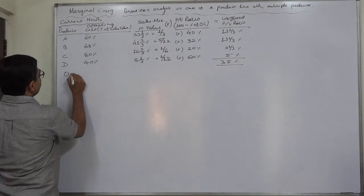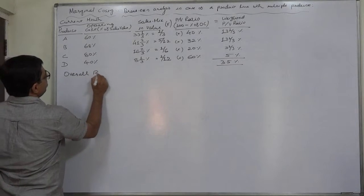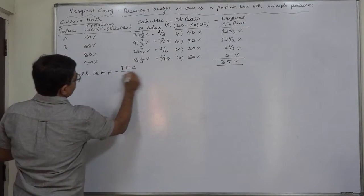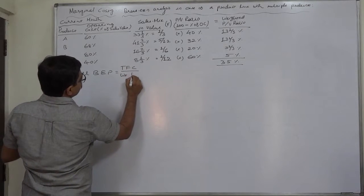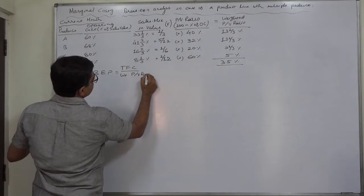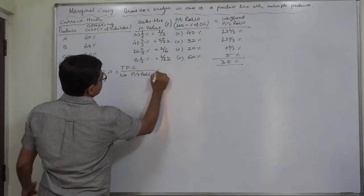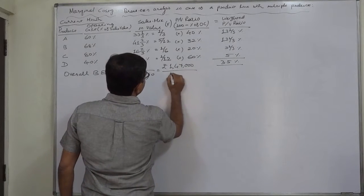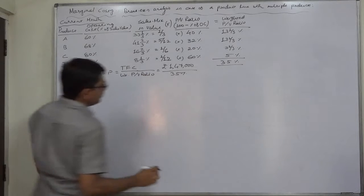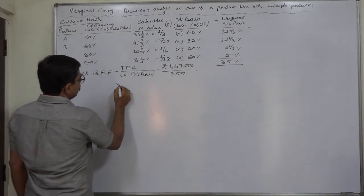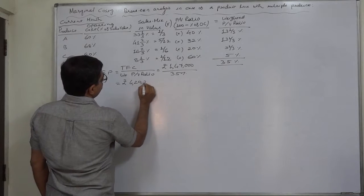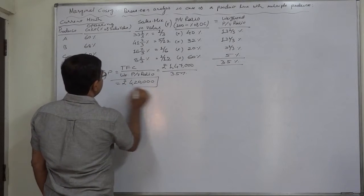Now we can calculate overall break-even point. That will be break-even sales value, total fixed cost upon weighted PV ratio. Because we have to use PV ratio, that will give us the sales value. Fixed cost is given to be 1,47,000. Now divide it by weighted PV ratio. So the overall BEP comes to rupees 4,20,000.